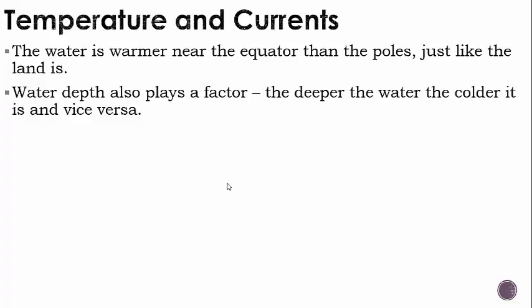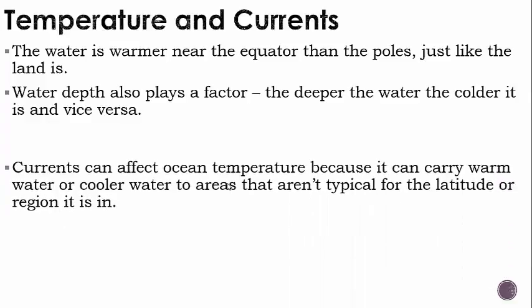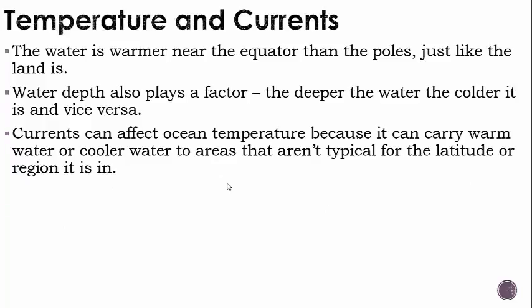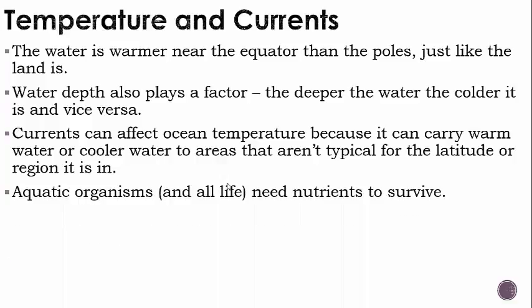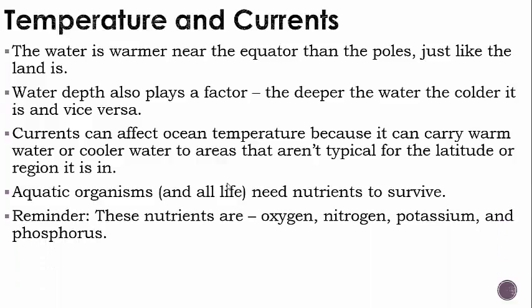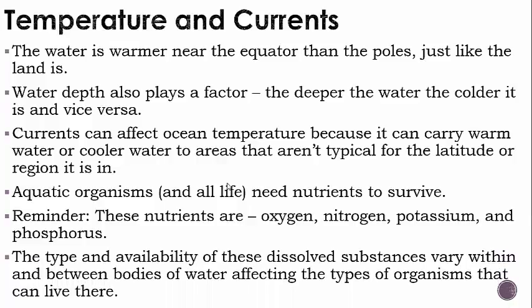Warm water will rise and cold water will sink. Currents can affect ocean temperature because they can carry warm or cooler water to areas that aren't typical for their latitude or region. Aquatic organisms and all life need nutrients to survive — oxygen, nitrogen, potassium, and phosphorus. The type and availability of these dissolved substances vary within and between bodies of water, affecting the types of organisms that can live there.